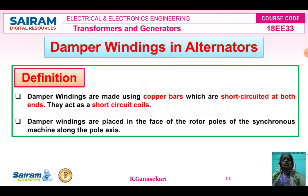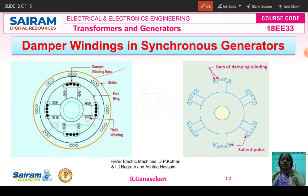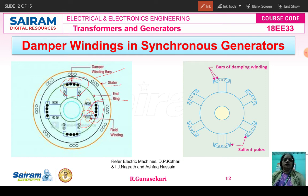The damper winding is nothing but a short-circuited copper bar — short-circuited at both ends, forming a short-circuit coil. Normally, the damper winding is placed on the rotor pole face of the synchronous machine, either synchronous motor or synchronous generator, along the pole axis. Looking at the circuit diagram, you can see the damper winding bar — a copper bar short-circuited at both ends. This is the stator, this is the rotor ring, and this is the field winding. The damper winding is placed on the pole face.